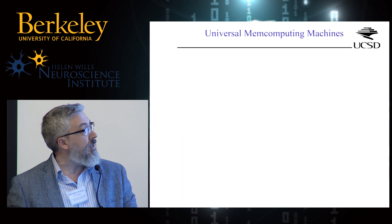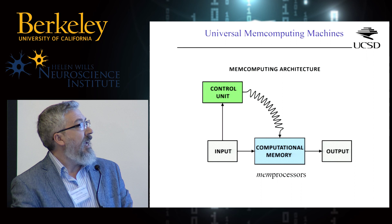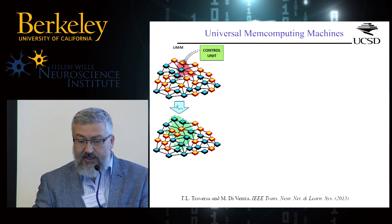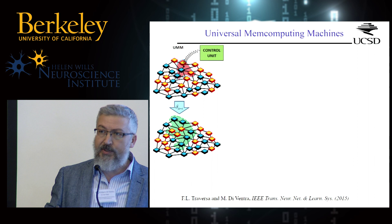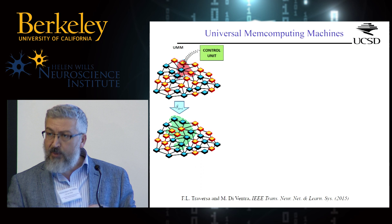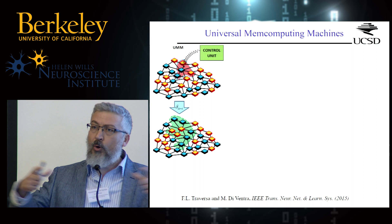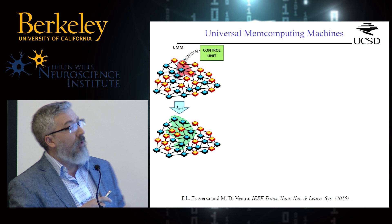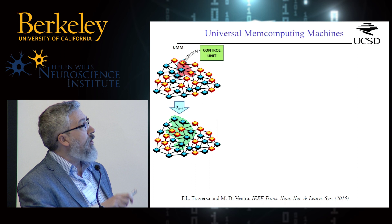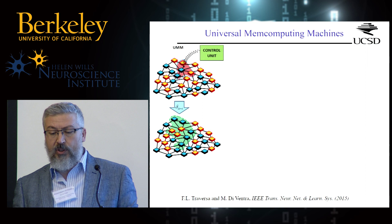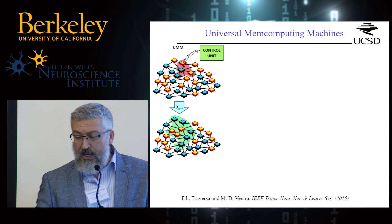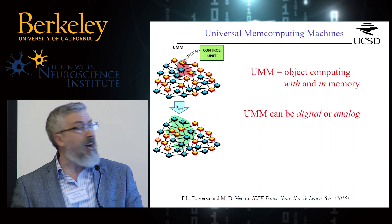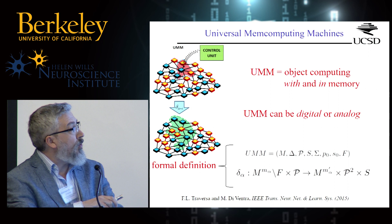These machines have a control unit that tells the machine what to execute, an input and an output, and what we call mem processors — networks of units possibly composed of transistors together with elements that have time non-locality, memory. When the control unit sends a signal, the collective state of this machine — like in quantum computing but this is a classical concept — changes according to the problem you're trying to solve, and through a transition function will solve it. The solution is stored in the units themselves. UMMs are objects that compute with and in memory, and can be defined as digital or analog, but can be defined mathematically as Turing did.